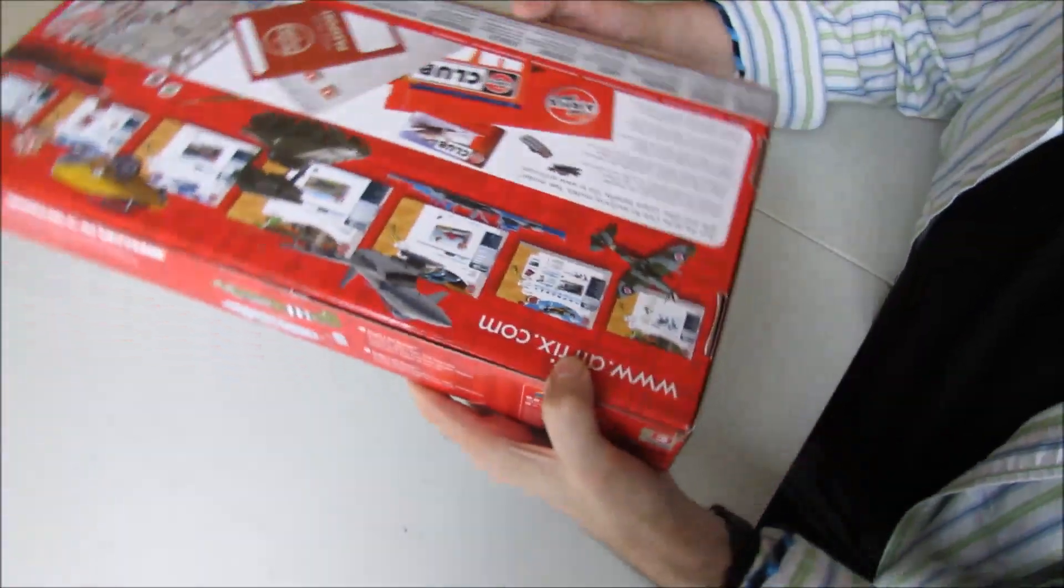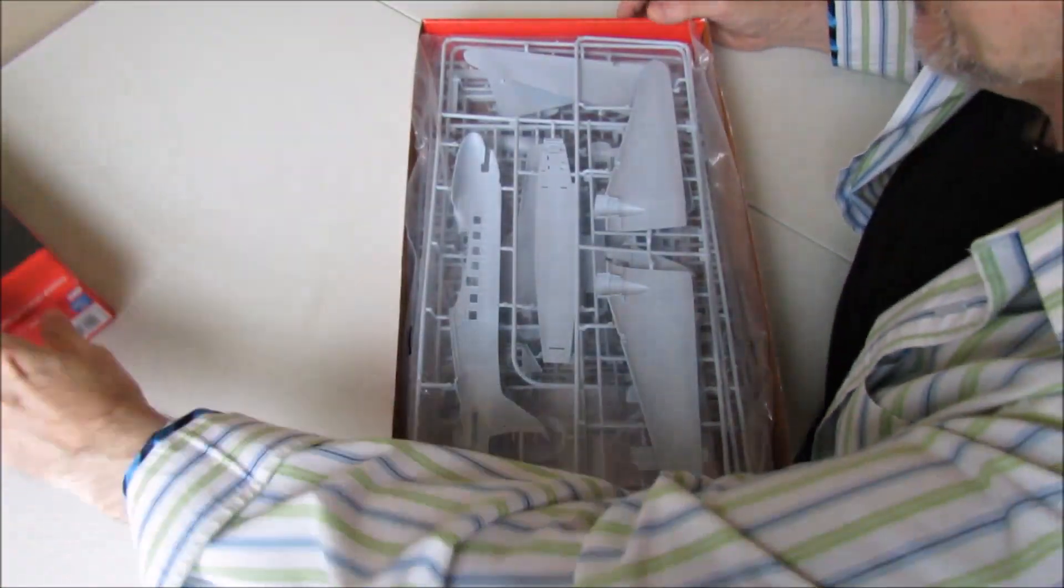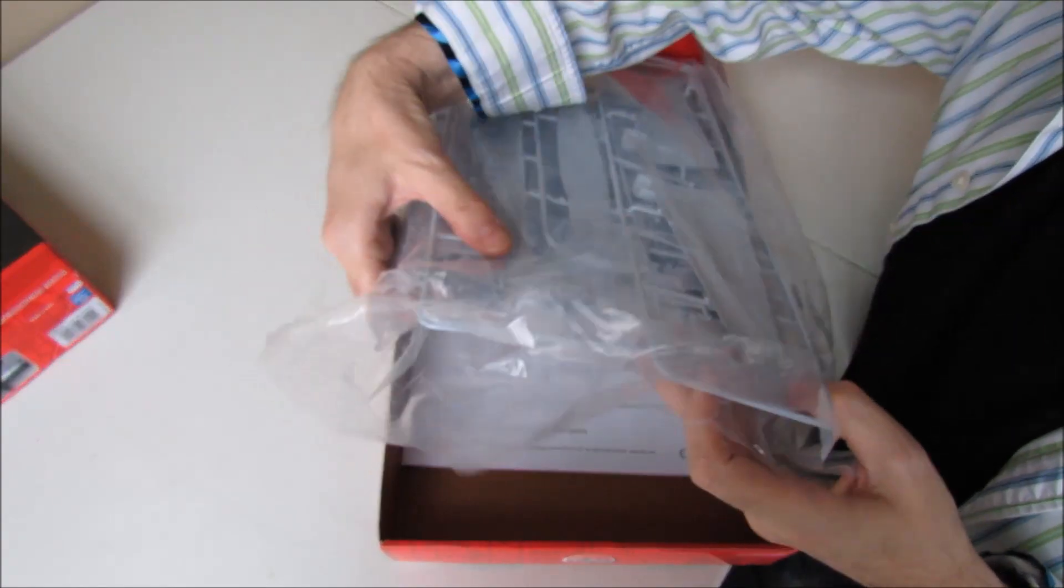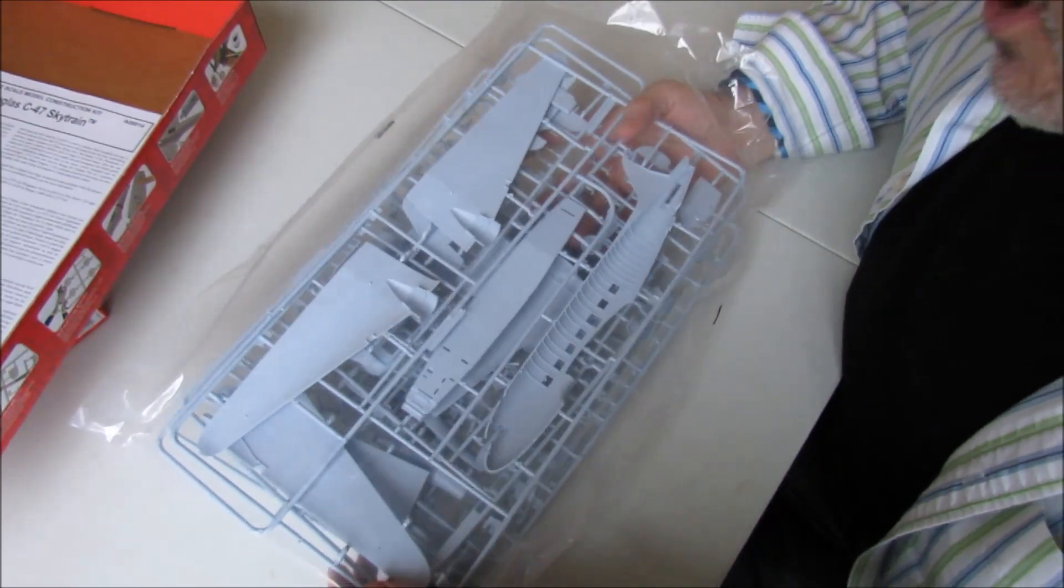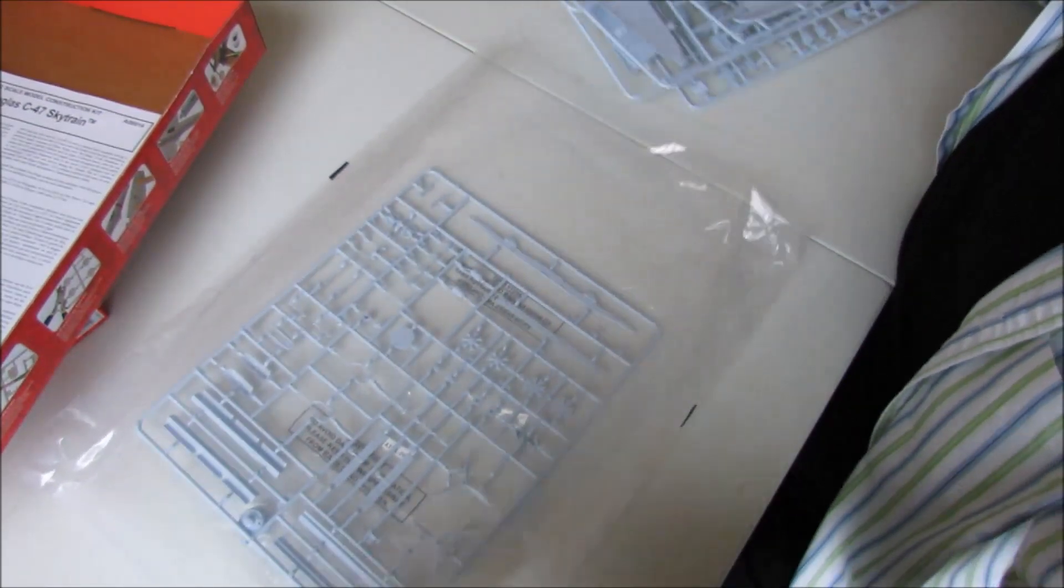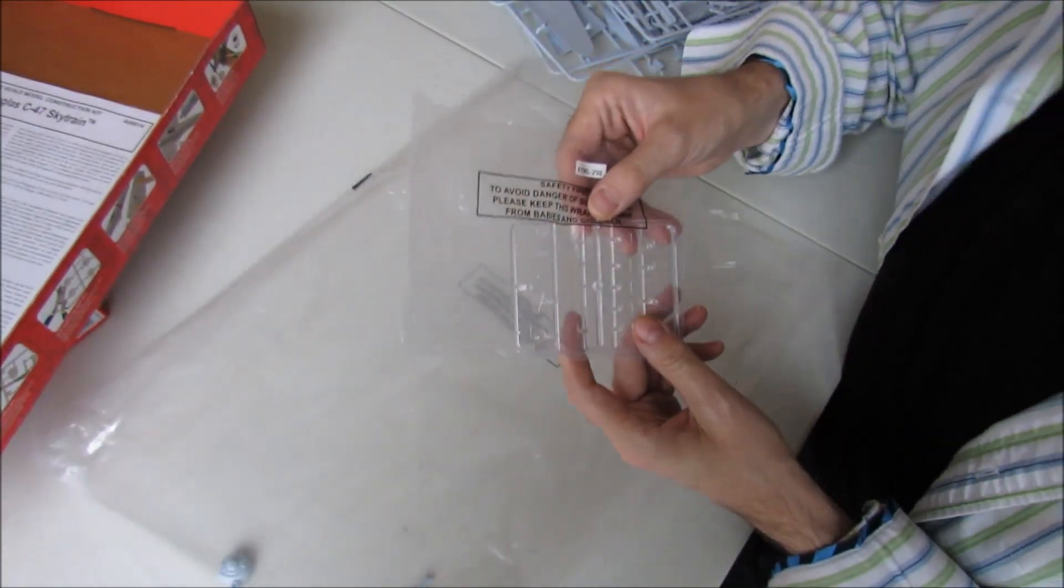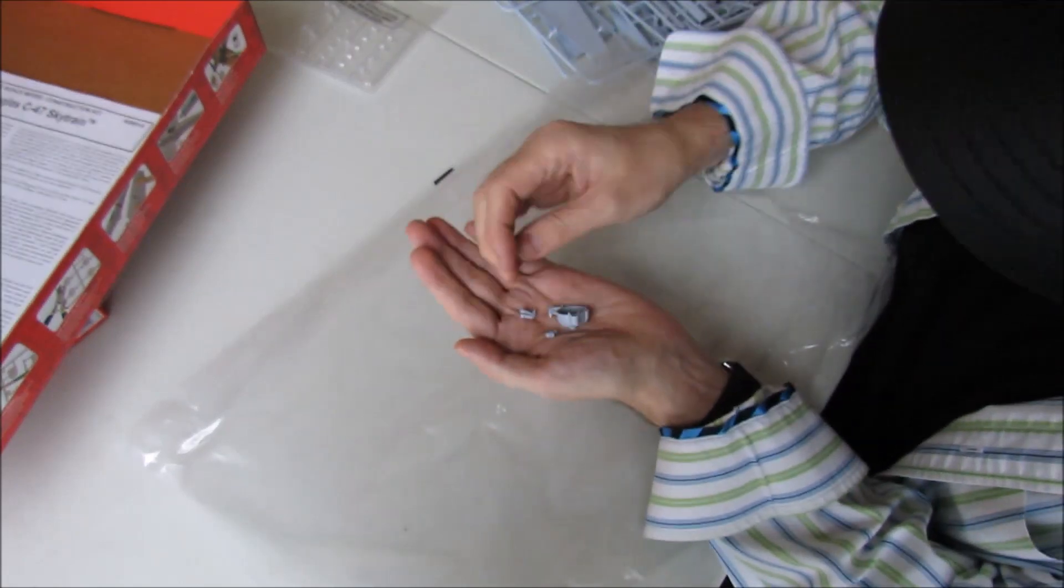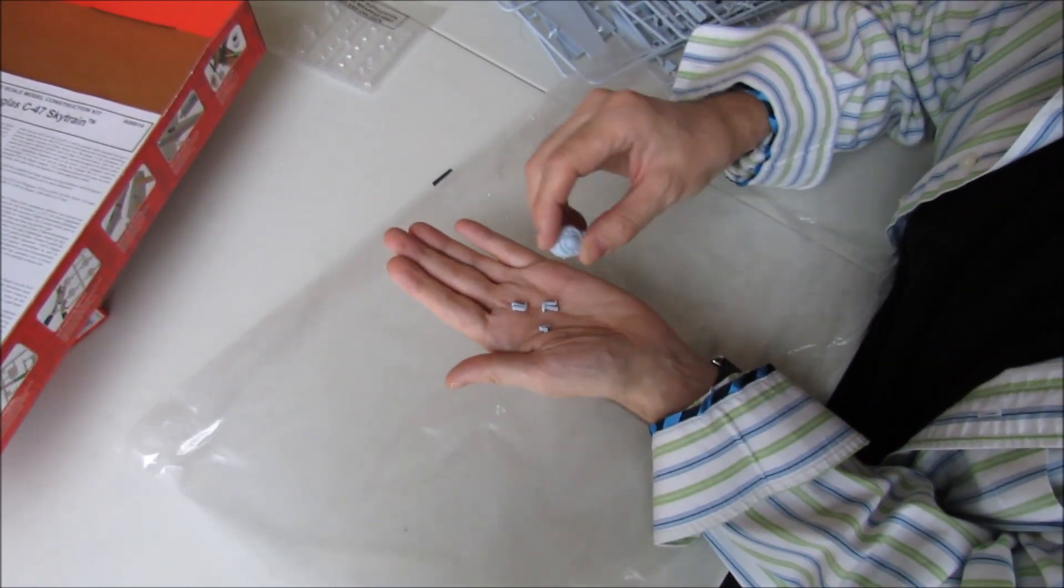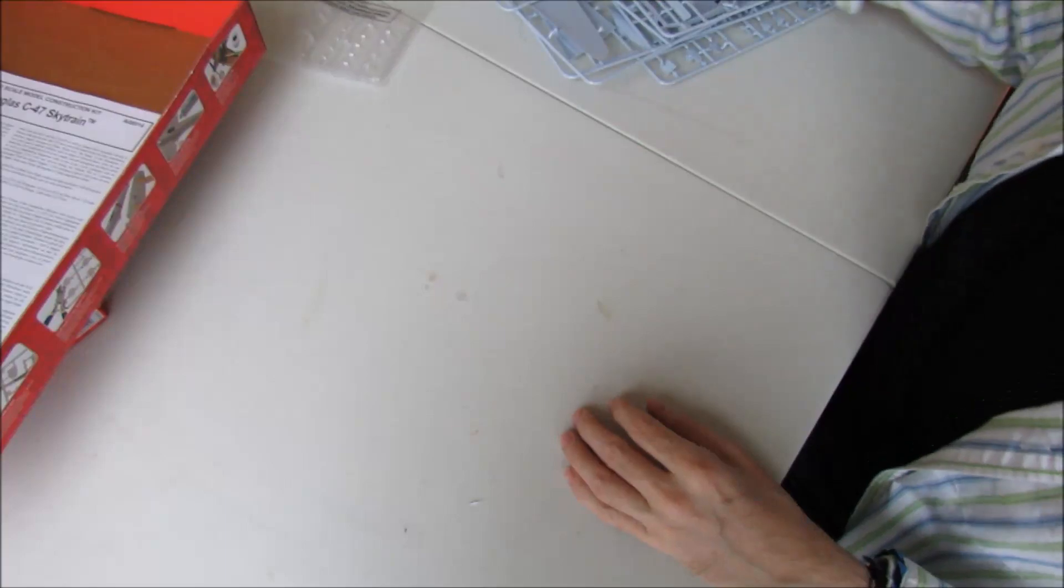Let's open it up and see what we've got. I did open the bag earlier just to check what was in there. It's five grey sprues in one big bag and then there's a separate bag of the clear sprues. I have some loose parts in here. Let me take them out and put them in the box. So four loose parts, three small parts and what looks like an engine cowling.